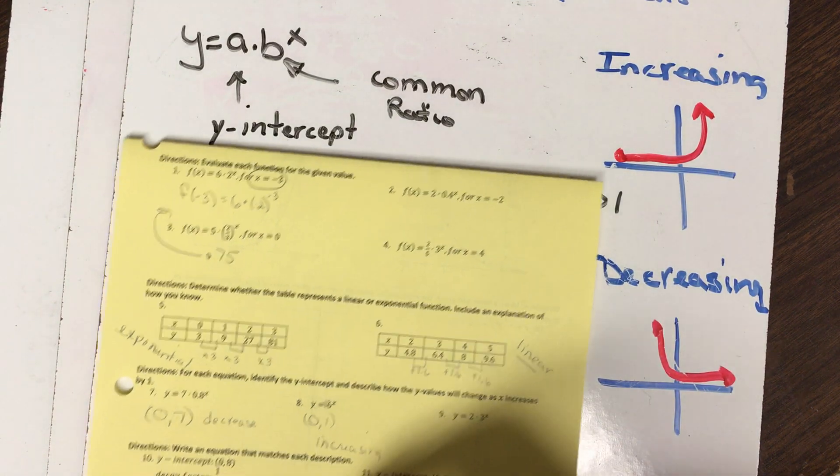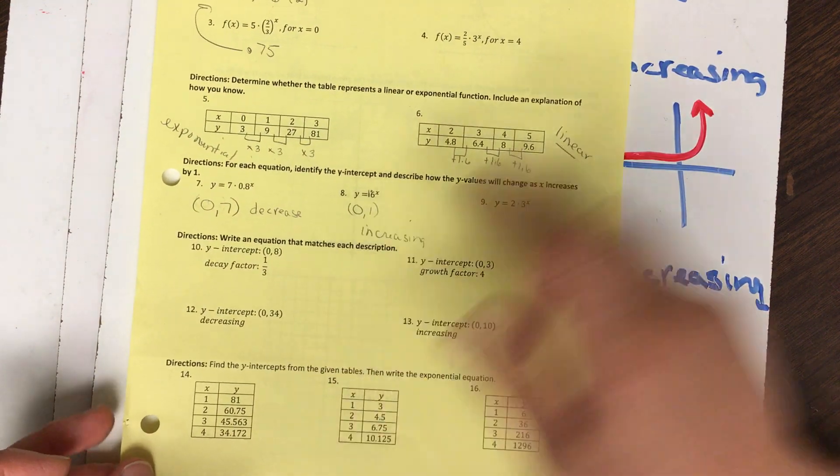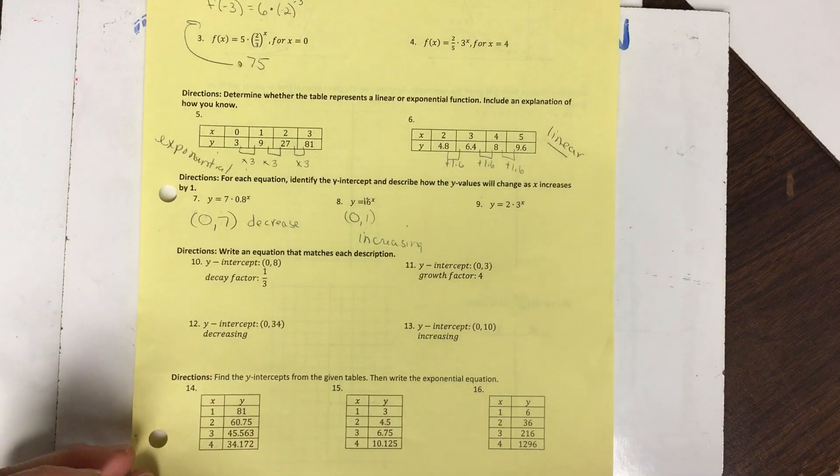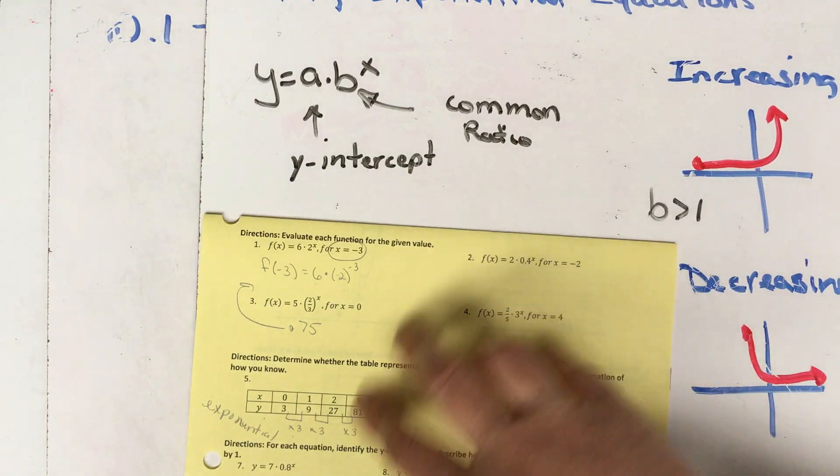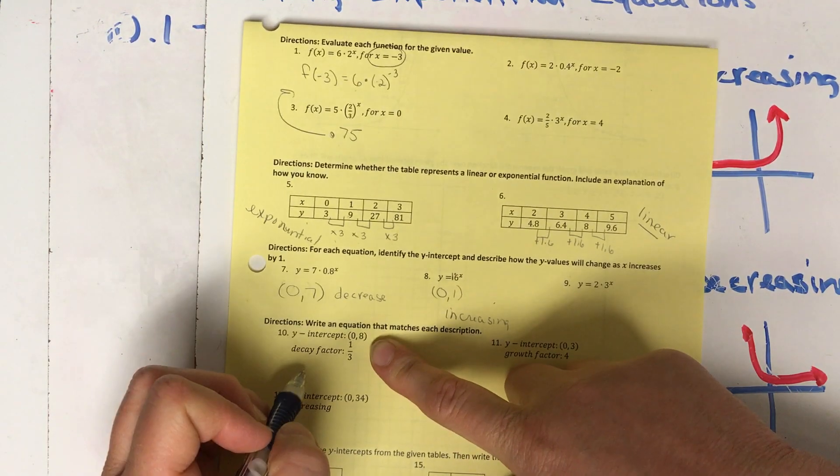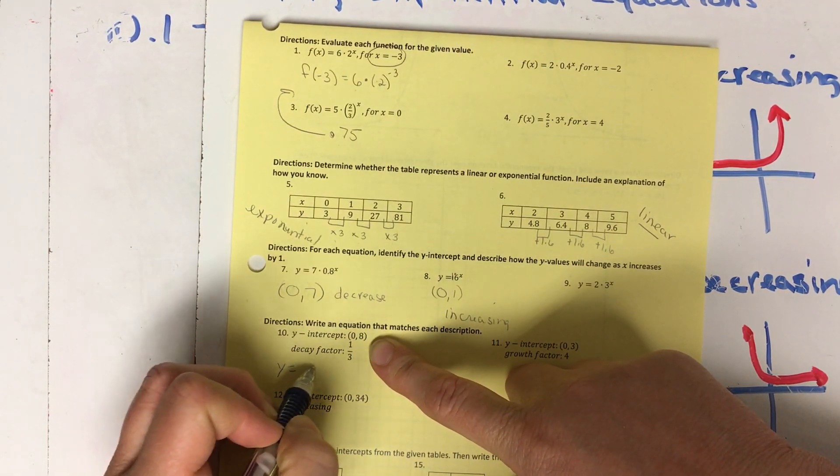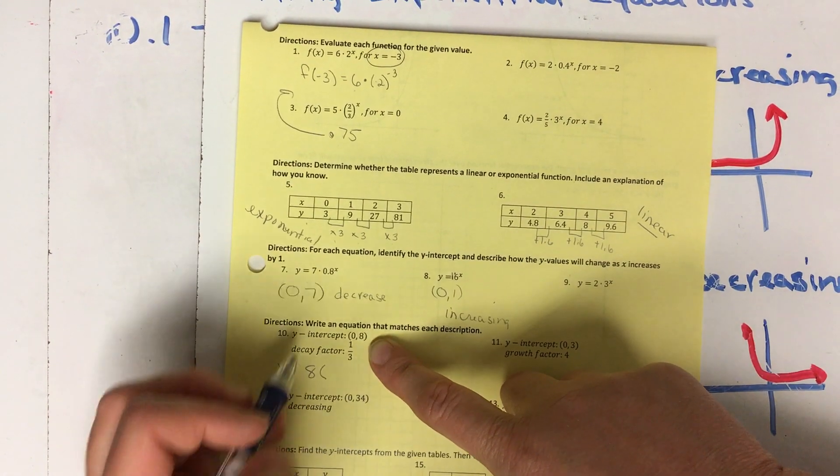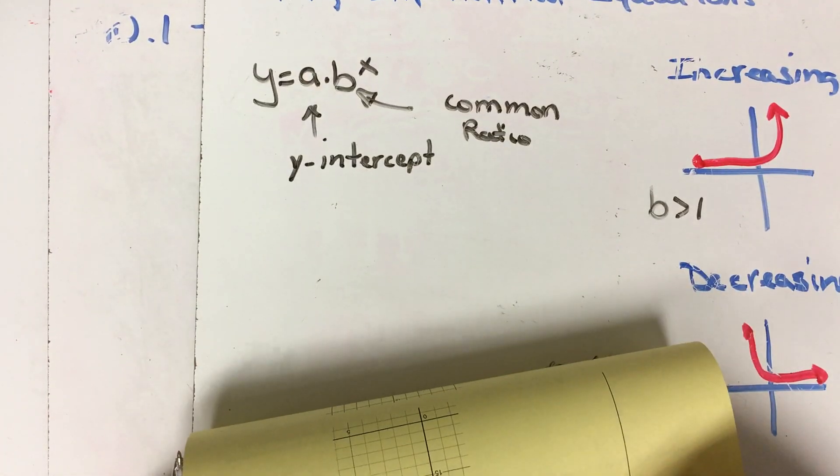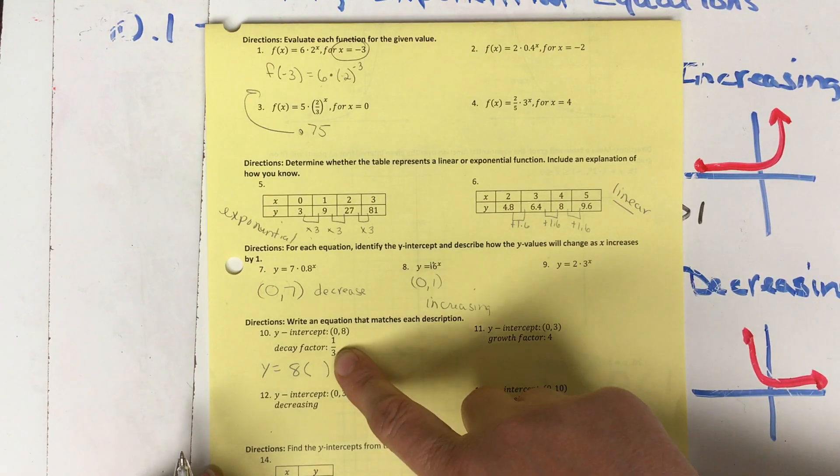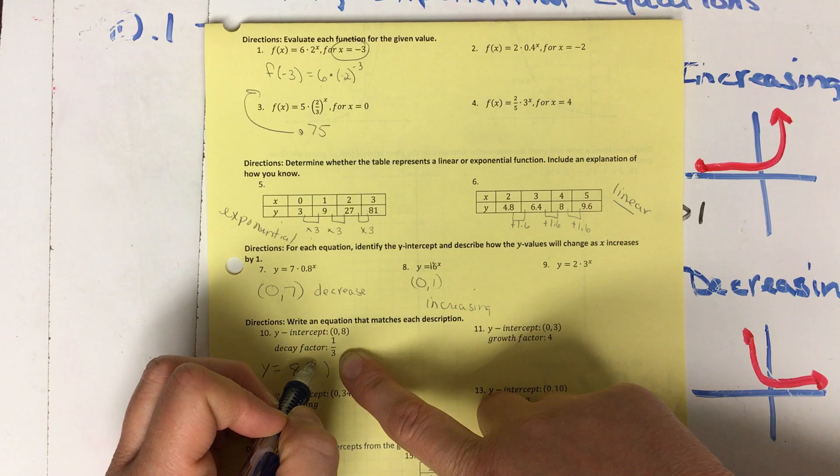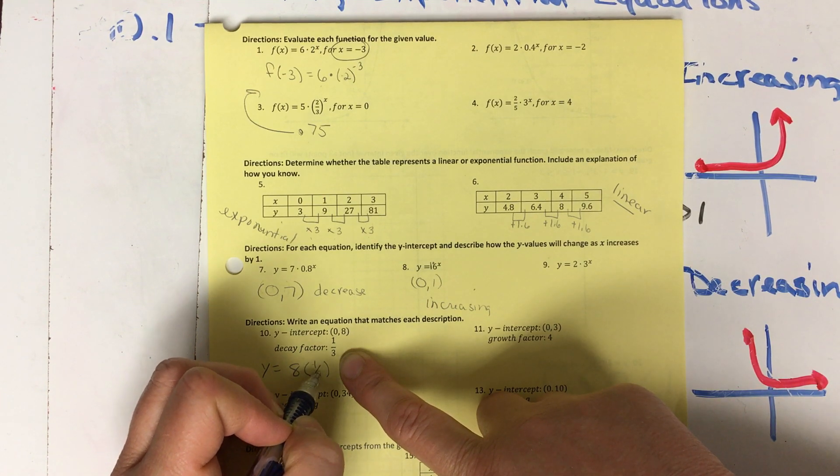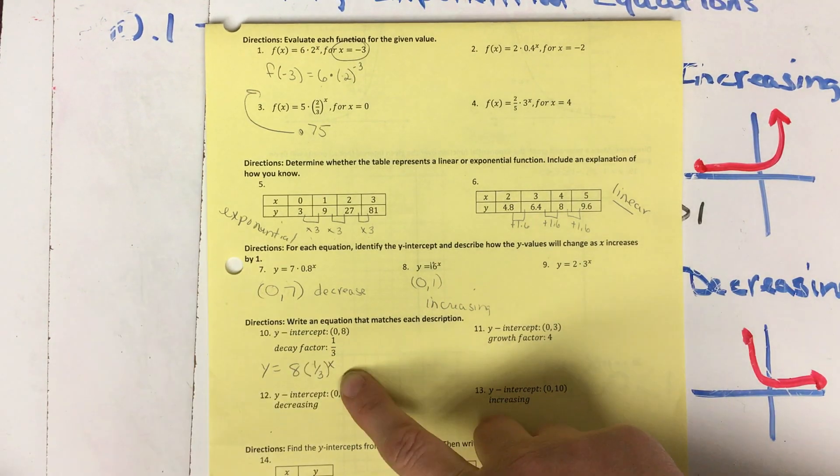Alright, let's take a look at our next section. Write an equation that matches the description. Alright, so we have to put our pieces together now. So we need our y-intercept, which is here, so we'll start that. So y equals 8, and I'm going to put that in parentheses to know I'm multiplying. And my common ratio in this case, or my decay factor, is 1/3, and then we put x in.